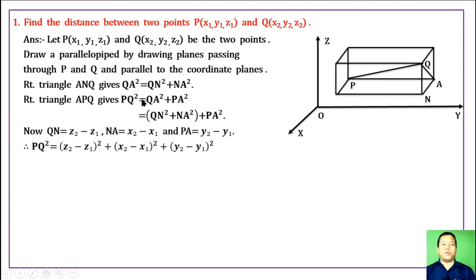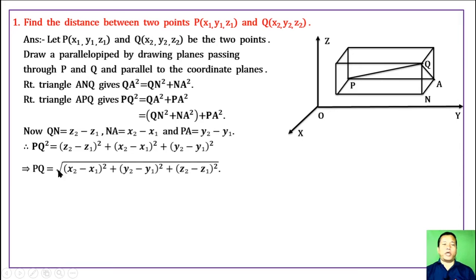PQ² = (z2 − z1)² + (x2 − x1)² + (y2 − y1)². Therefore PQ, taking the positive square root, gives the distance between the two points.